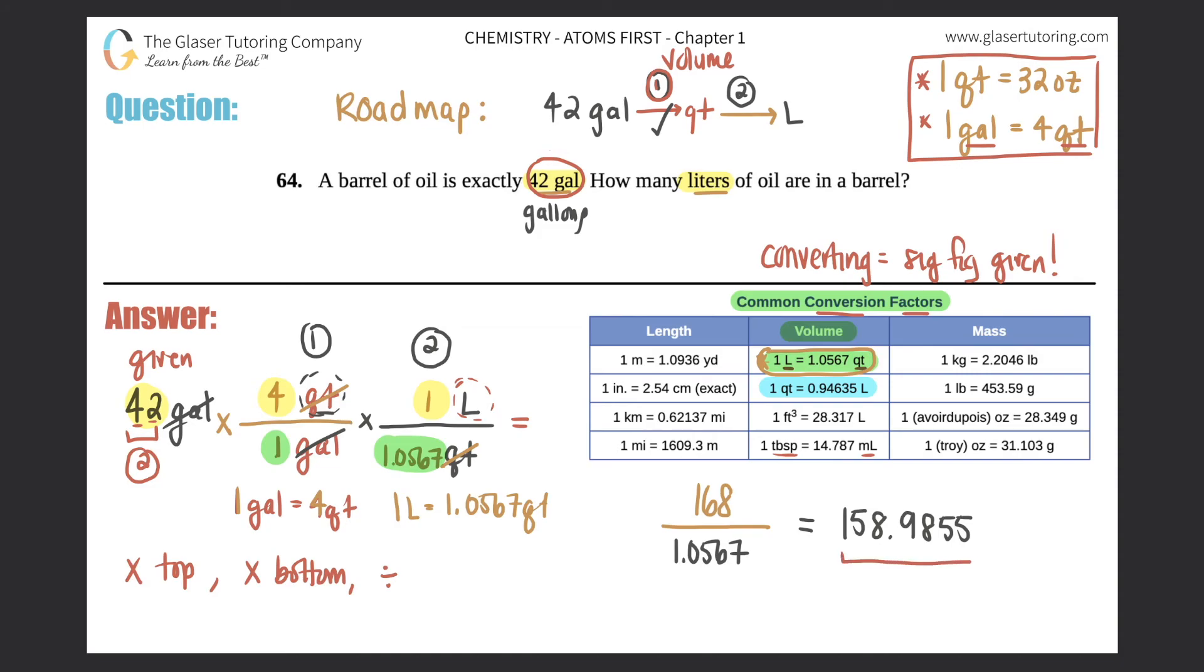So I have to take this number and convert it into just two sig figs. So I will keep the one, I'll keep the five. The next number will tell me if I have to round - it's more than five, so this five would actually turn into a six.